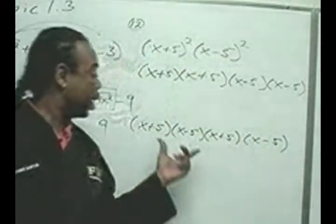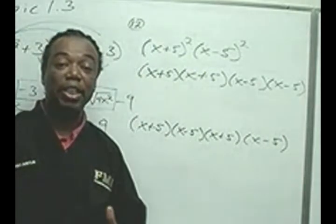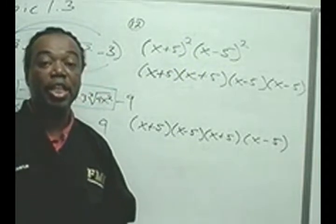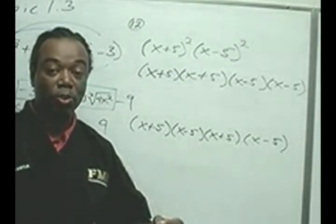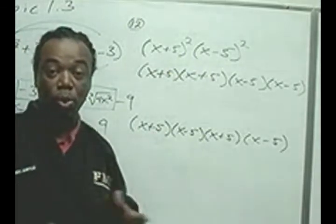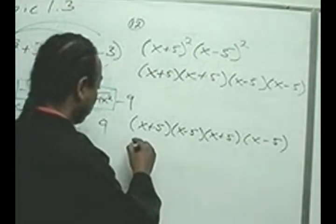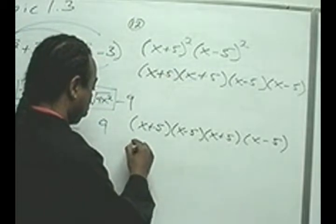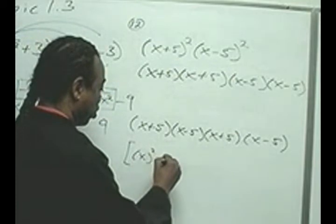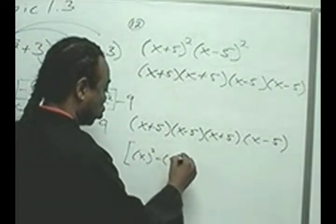Next, this combination here is binomials that are conjugates. The rule for multiplying conjugates is a squared minus b squared. This is our a, and this is our b. So, a squared minus b squared.